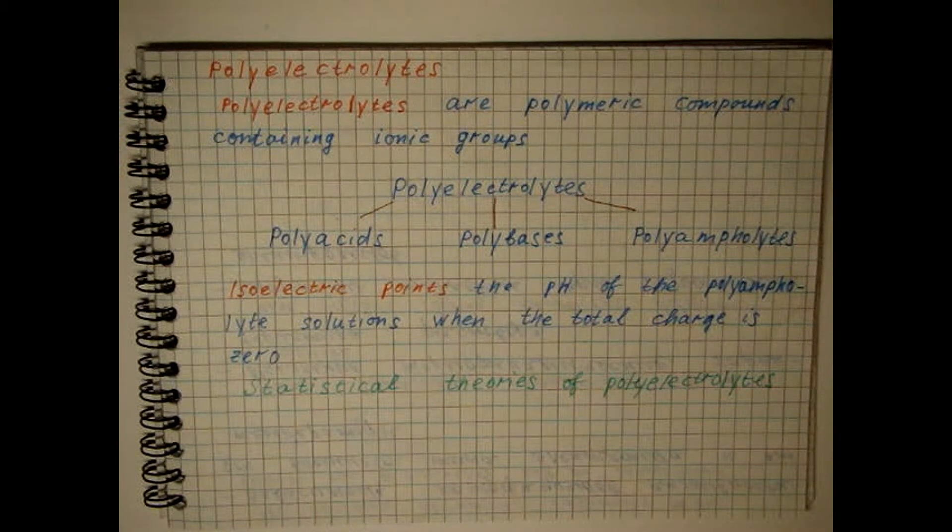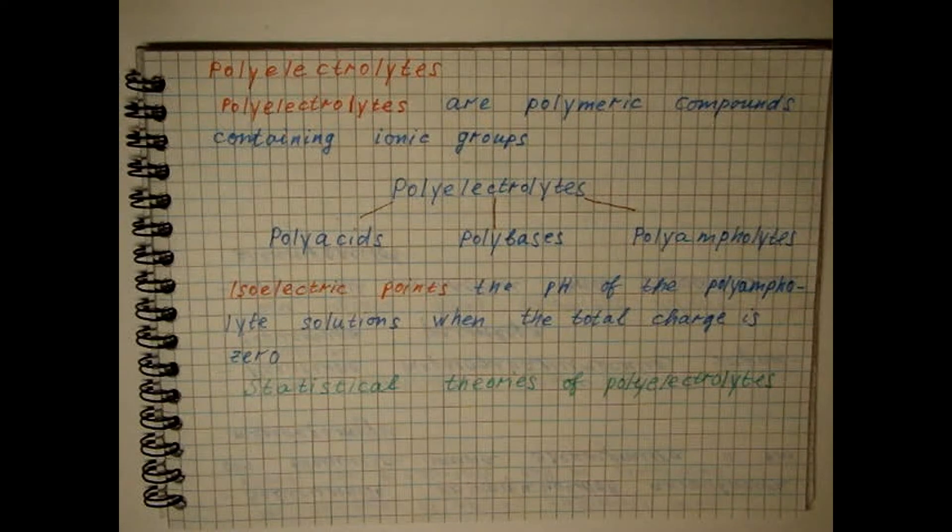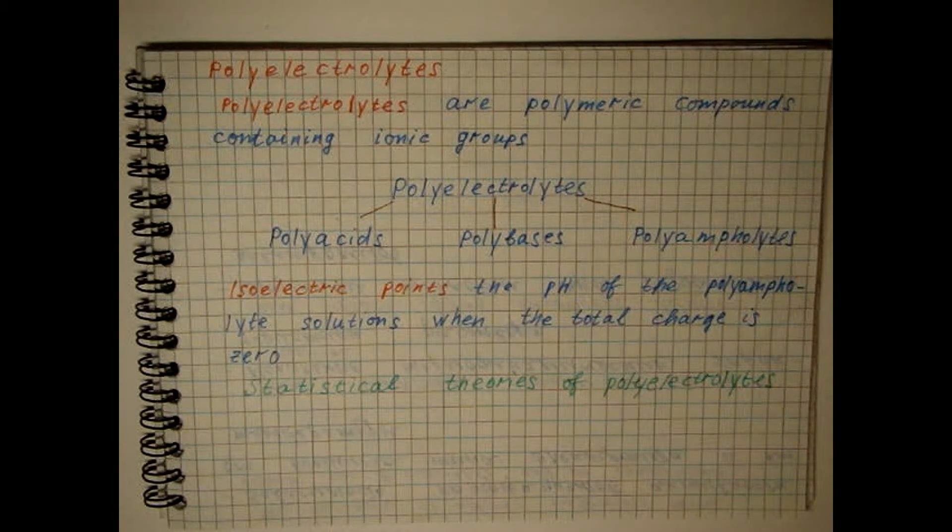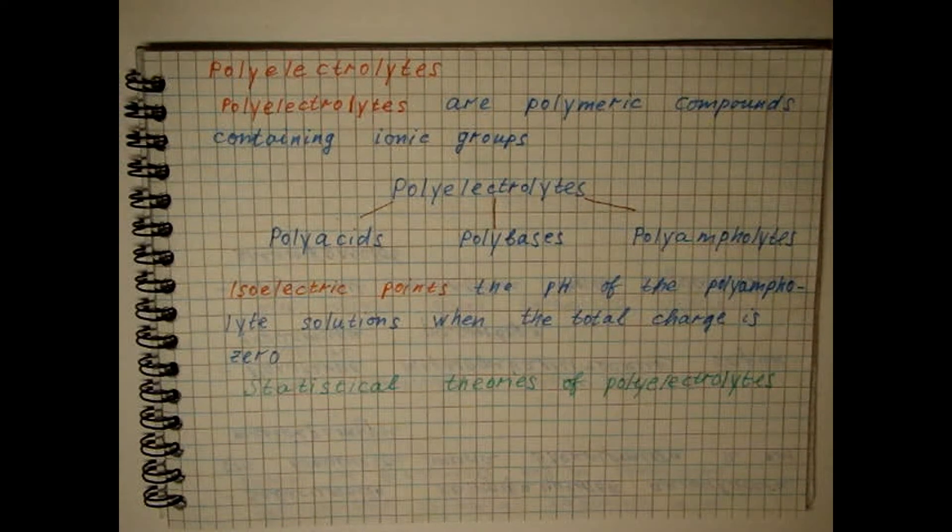Spherical or chain models of macro-ions are usually used, which means the applicability of the corresponding theories to certain groups of polyelectrolytes.